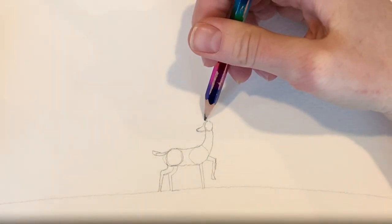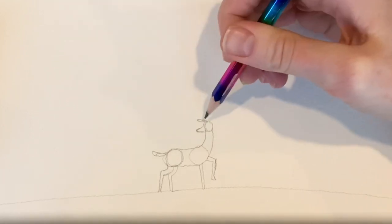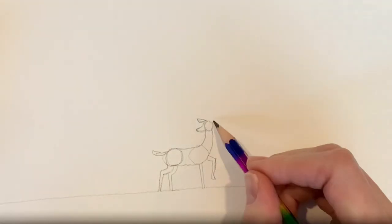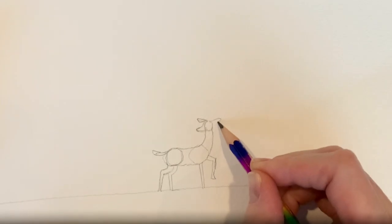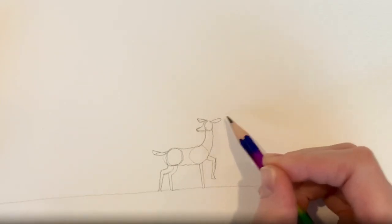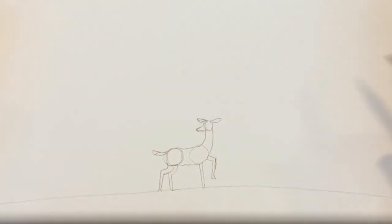Now I'm adding some little almond-shaped ears on each side. If I want this to be a female deer, I'll leave it like this.